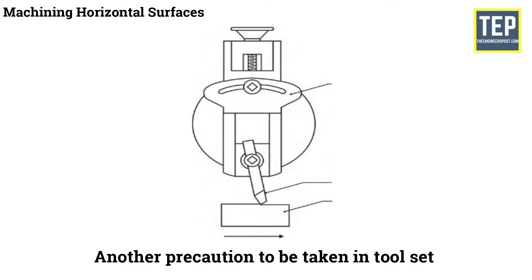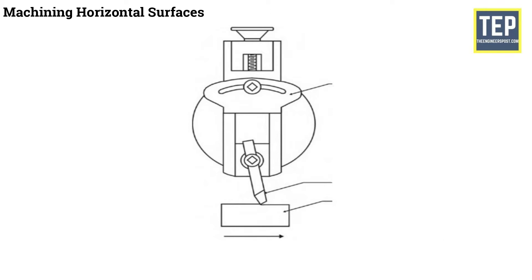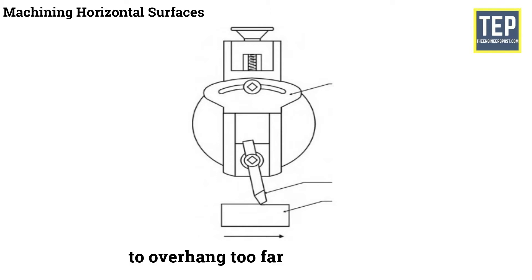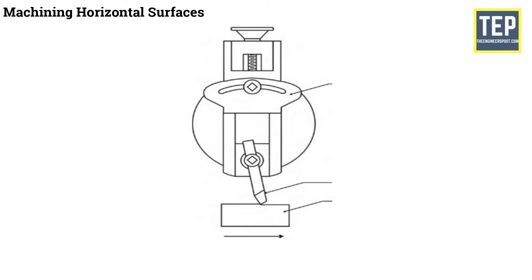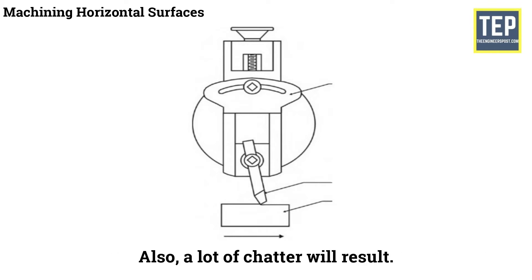Another precaution in tool setting is that the cutting edge should not be projected much below the tool holder. The vertical slide of the tool head should not be made to overhang too far below the ram; otherwise the tool will be weakened and subjected to undue strain, and a lot of chatter will result.